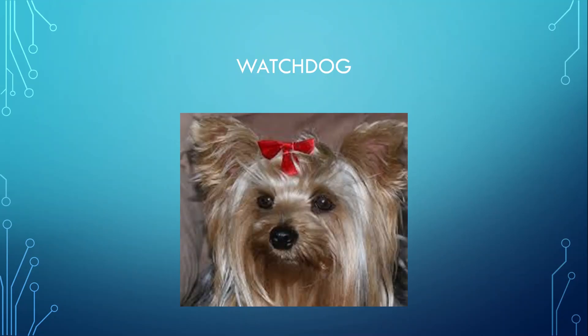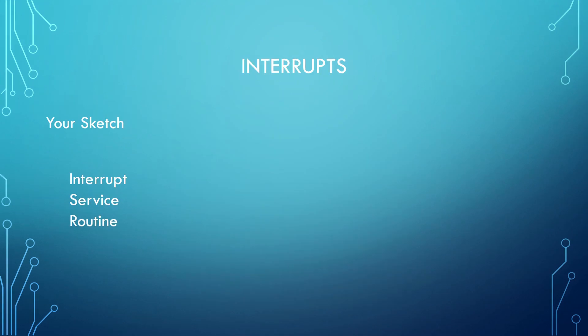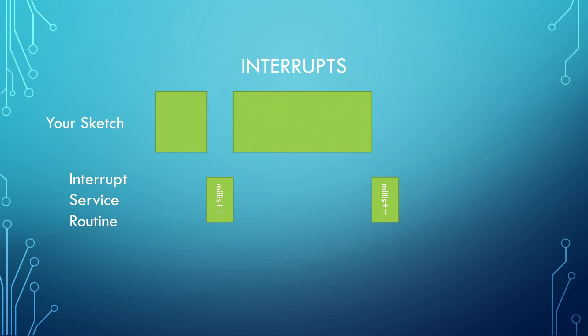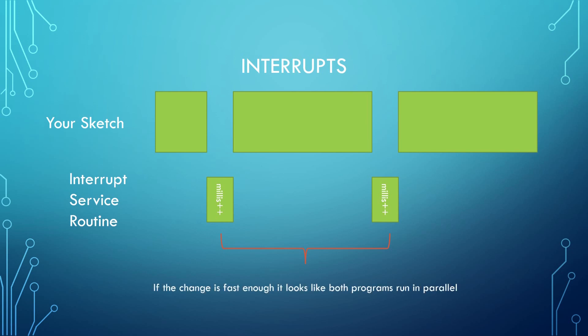A commonly used solution for this problem is called a watchdog. Watchdogs generally use interrupts. For those of you who do not know the concept of interrupts: all microcontrollers support this concept. It allows interrupting your sketch without your knowledge. All Arduinos use this concept to update the millis and micros counters — you do not need to do anything. These counters are always up to date, managed by a timer in the microcontroller chip itself. These timers run more or less independent from your sketch, and this fact can be used to build watchdogs.